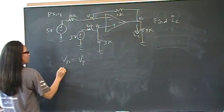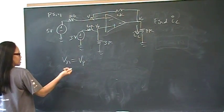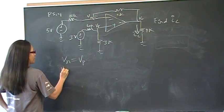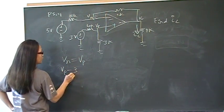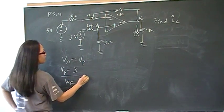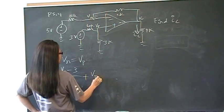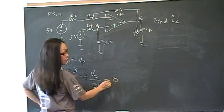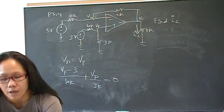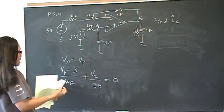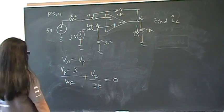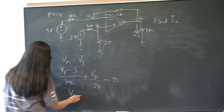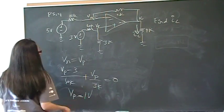So, Vp — to solve for Vp, we're just going to do KCL at Vp. So we have: (Vp minus 3) over 6k, plus Vp over 3k, plus Vp equals 0. That's just an algebra problem, and I'm going to assume you know how to solve for Vp. You should get Vp equals 1 volt.